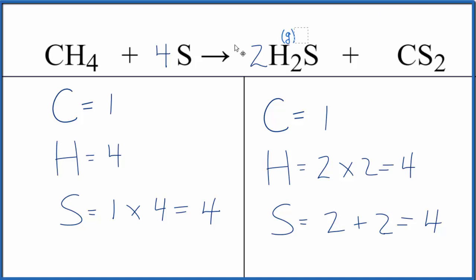We wanted to write the states. Methane would be a gas. The sulfur, that would be solid. Probably the H2S, that would be a gas, the hydrogen sulfide. And then CS2, this is going to be exothermic. So initially, this will be a gas. If you let it cool down, it would be a liquid.